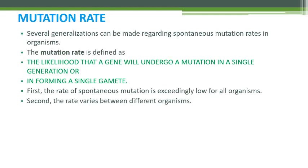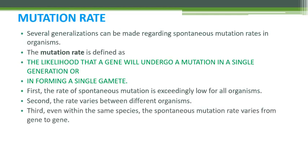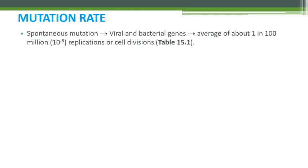The second generalization is that mutation does occur in different organisms but with different rates. Adding to the complexity, even within the same species the spontaneous mutation rate varies from gene to gene. Not all genes mutate at the same rate. So these are the three generalizations: spontaneous mutation rates are very low, rates vary across species, and even genes of the same species mutate at different rates.